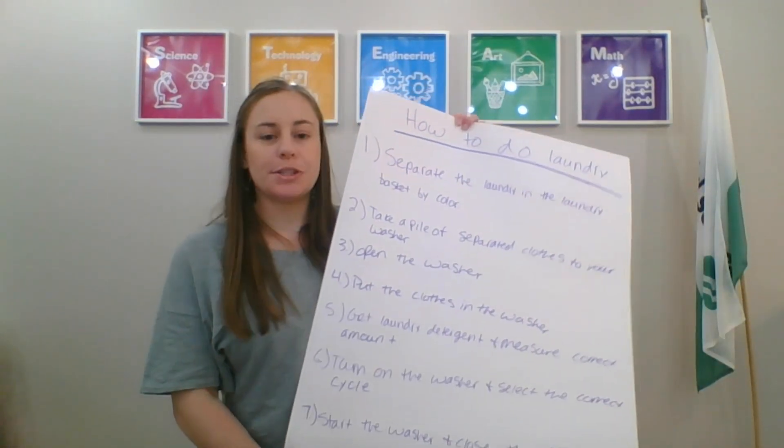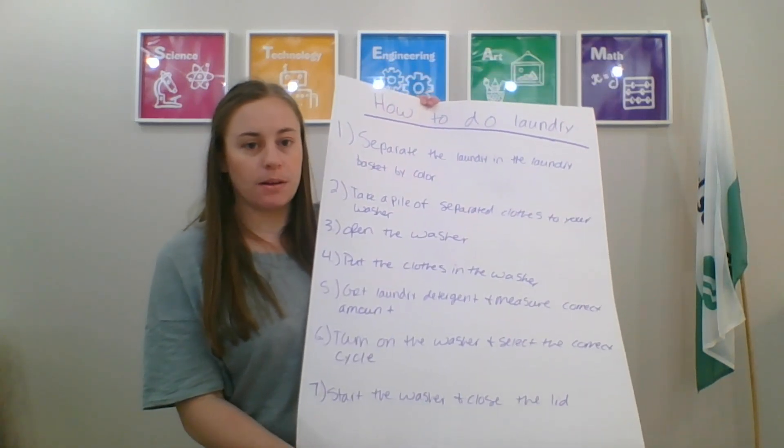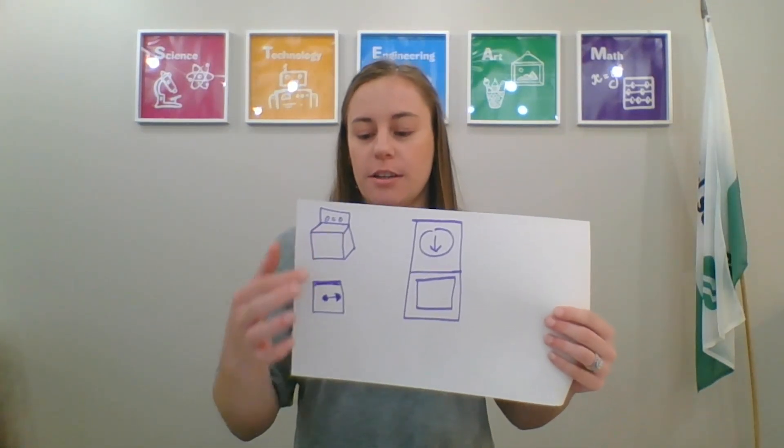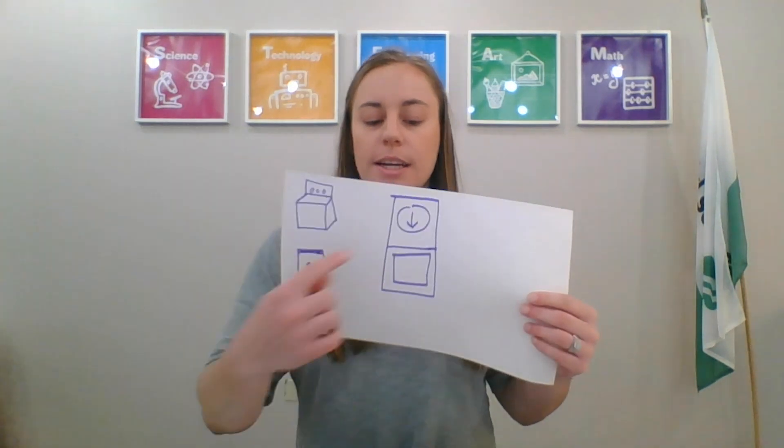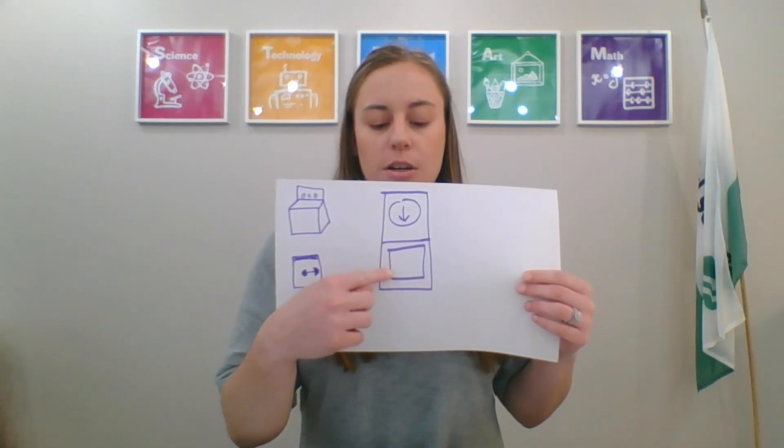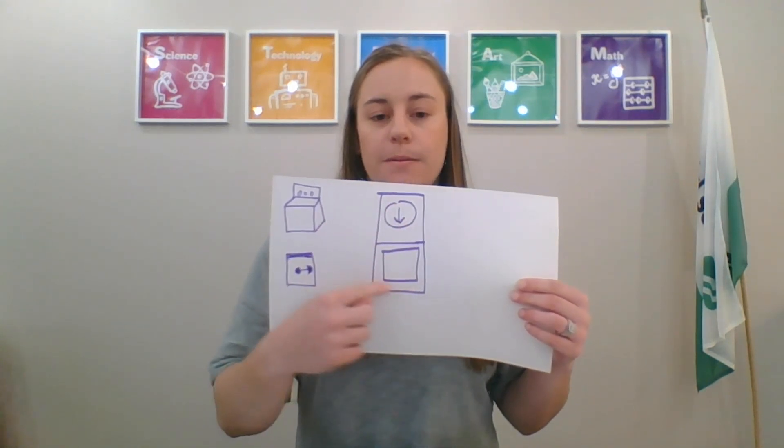When you make different prototypes of your ideas, you can see what works and what doesn't work. Now, think of the skill that you just created an algorithm for. How can you use technology to make the task easier or more fun? The task that I chose was how to do laundry. So I created my algorithm, steps one through seven, for how to do laundry. Now, we are going to brainstorm how we can make laundry easier. So for me, laundry would be easier if my clothes in the washer went to my dryer. So I drew a washer and this is the inside of my washer, and there's an arm that pushes the clothes into the dryer. The second type of prototype that I drew was a washer on top of a dryer where the washer opened up and the clothes fell into the dryer and it would start.